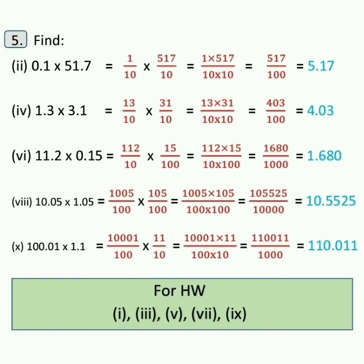Now sum number 6: 11.2 into 0.15 is equal to 112 upon 10 into 15 upon 100, is equal to 112 into 15 upon 1000, which is 1680 upon 1000, is equal to 1.680. Now pay attention: we can write 1.680 as 1.68 also. Remember this.